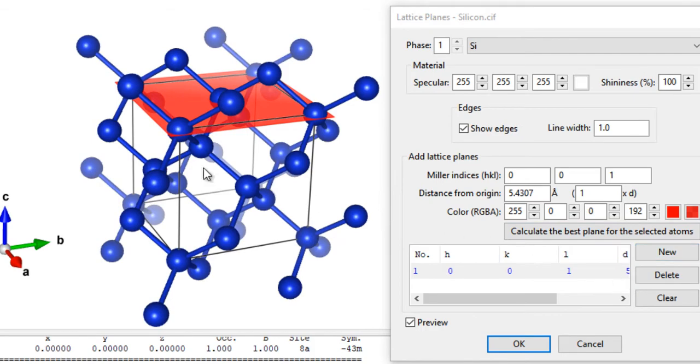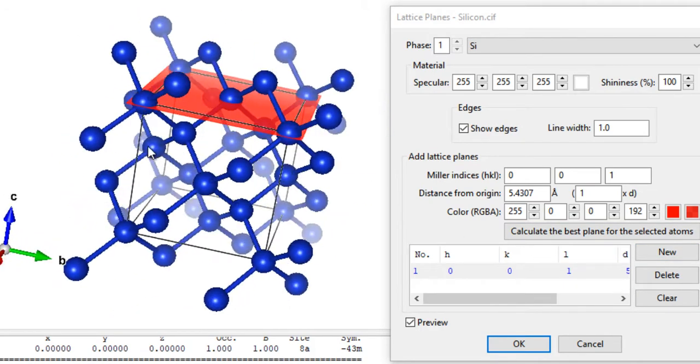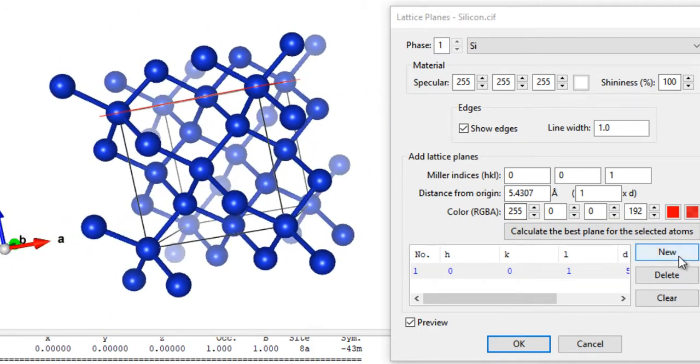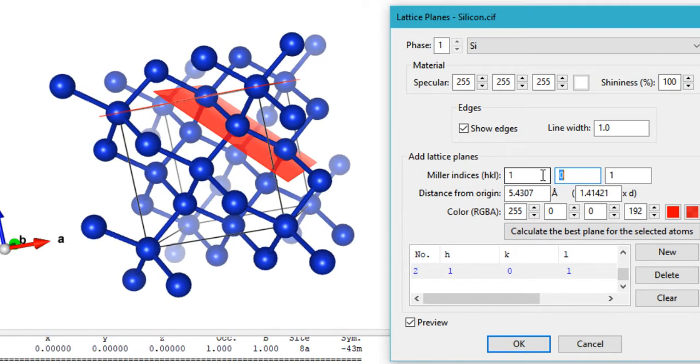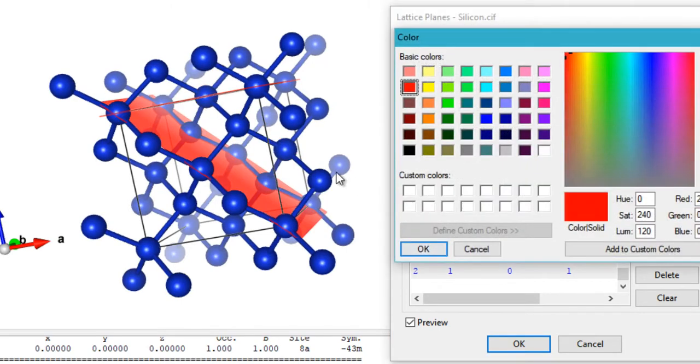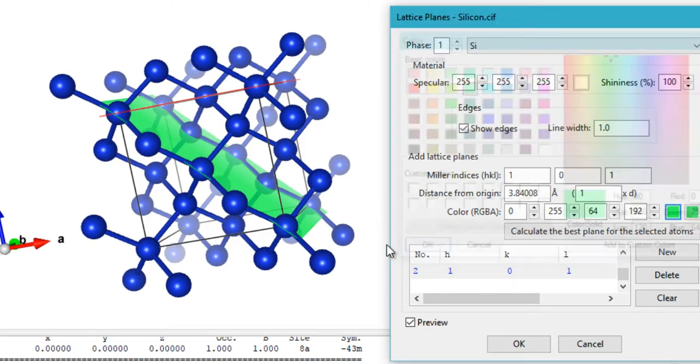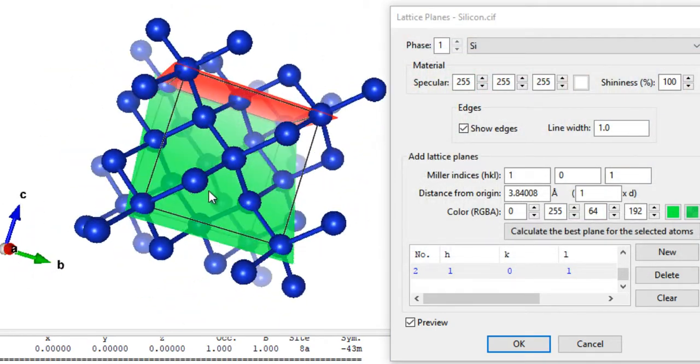You can even visualize multiple planes at once. You can click on New and then visualize that plane. Just change it back to 1 and change the color of this one to something else. Now we're visualizing two planes at a time.